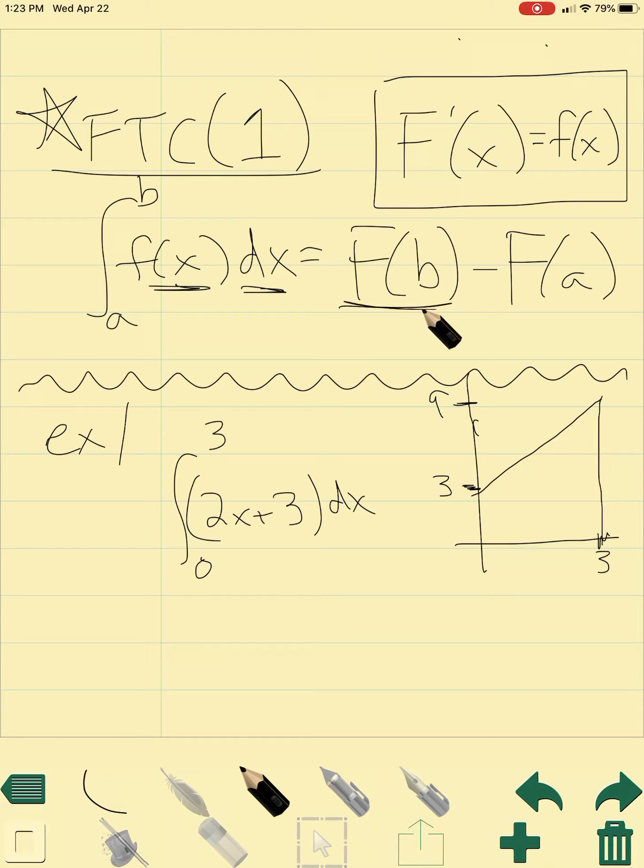What that actually is, is we're looking for a specific area underneath the curve. So if we have some curve and we want to find the area underneath it from a to b, you can take the antiderivative of b and subtract the antiderivative of a, and you end up getting what that area is underneath that curve.